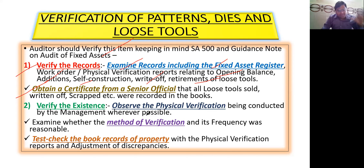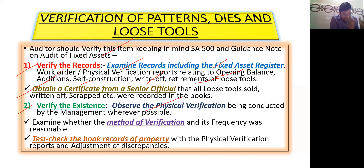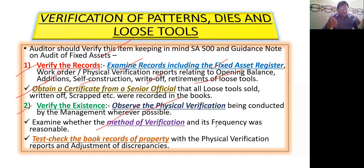After verifying the records, the auditor will verify the existence — meaning, observe the physical verification being conducted by the management wherever possible. The auditor will check whether the loose tools, patterns, dies actually exist. He will observe and check the physical verification conducted by management, and examine whether the method of verification and its frequency was reasonable.